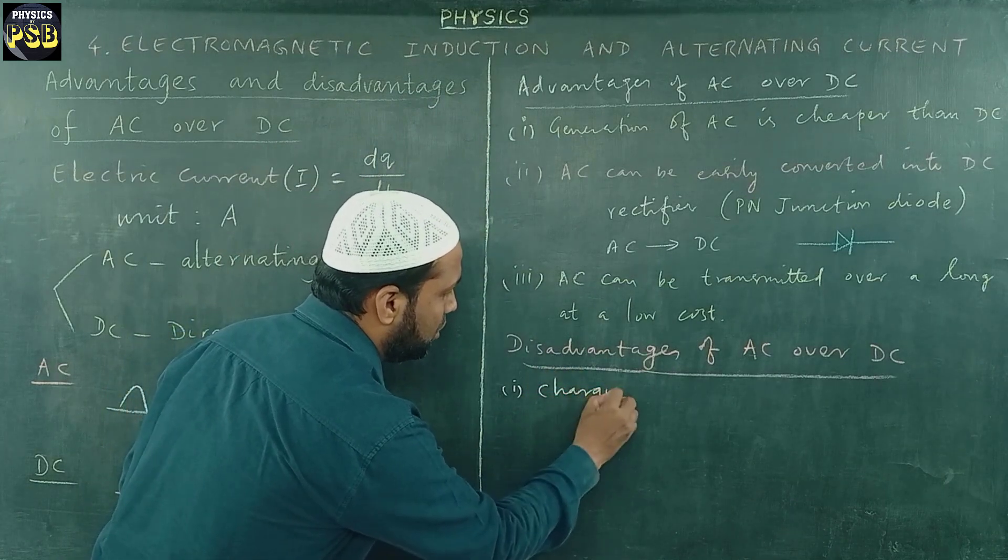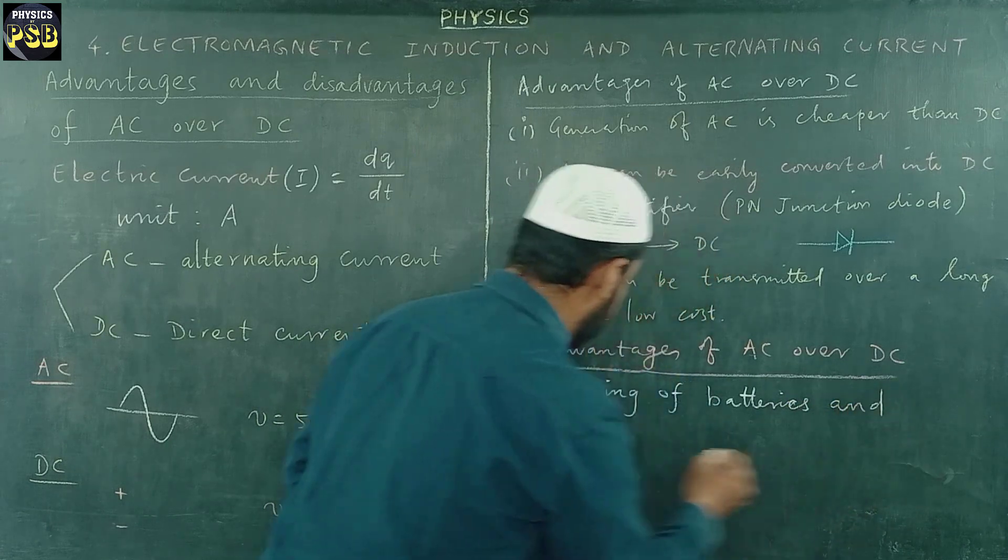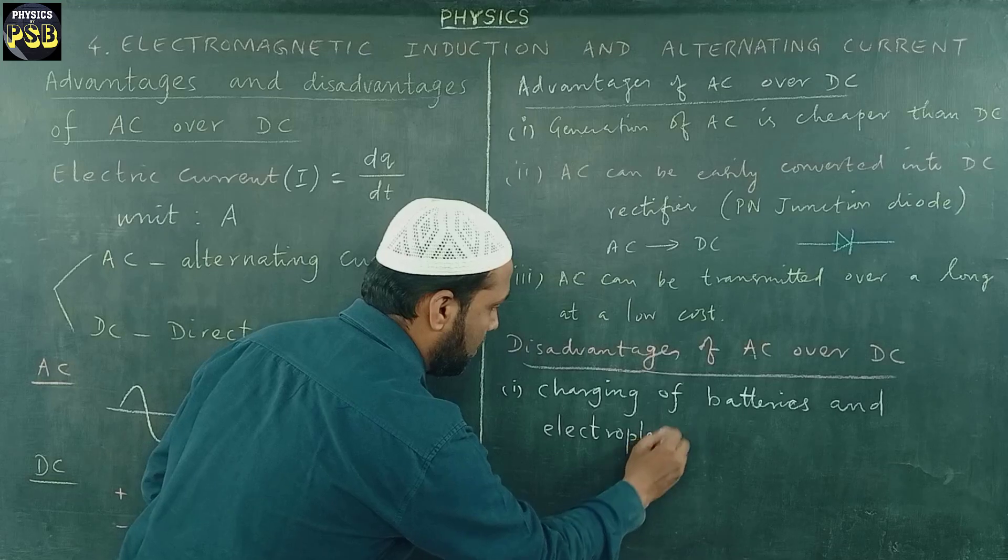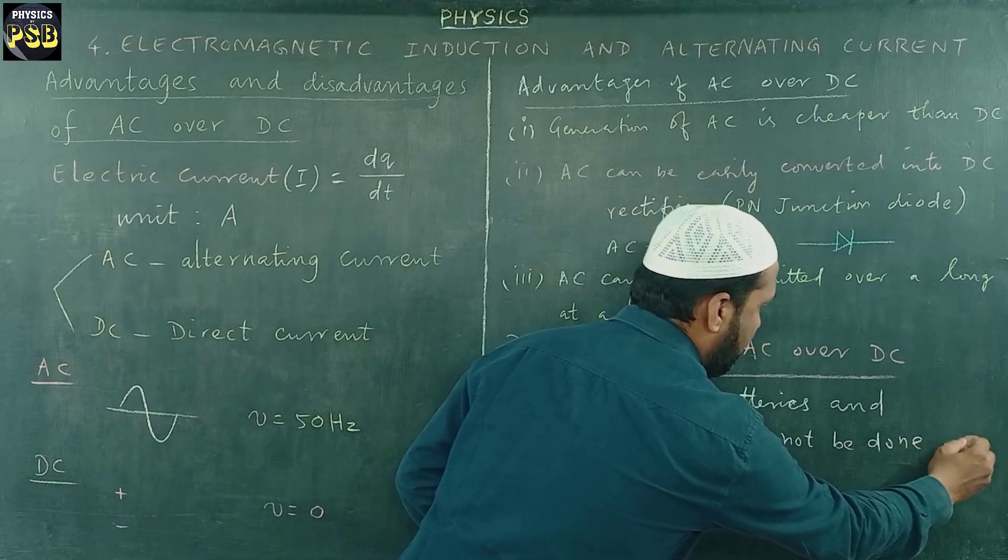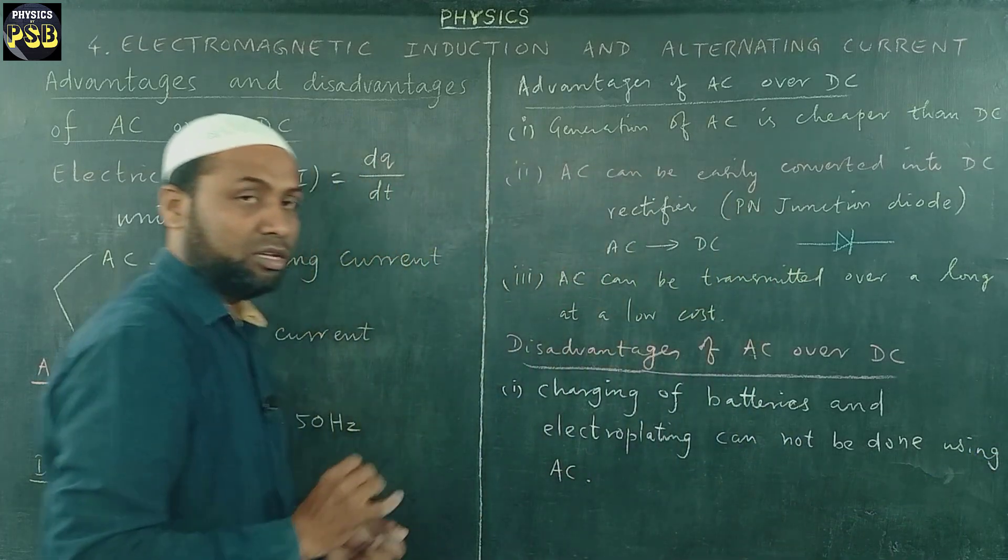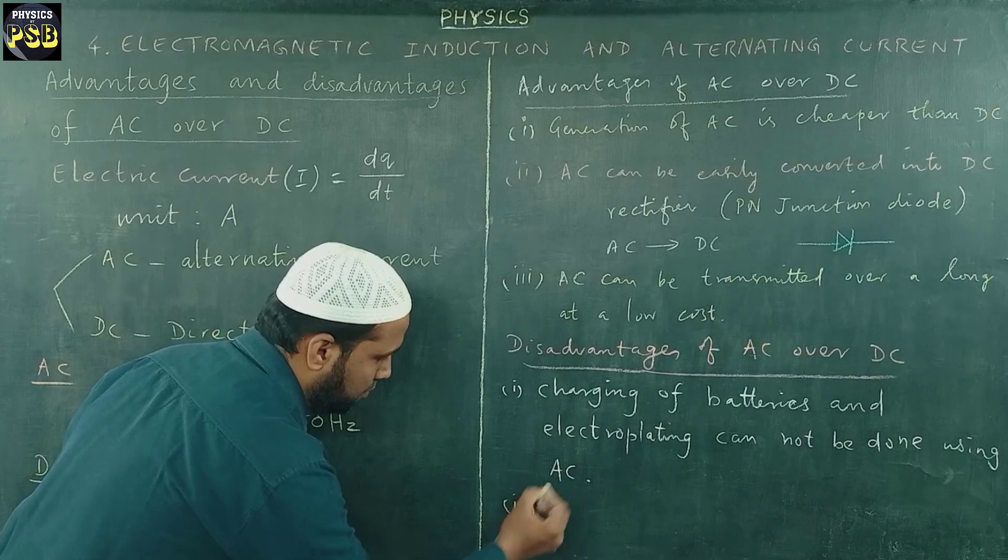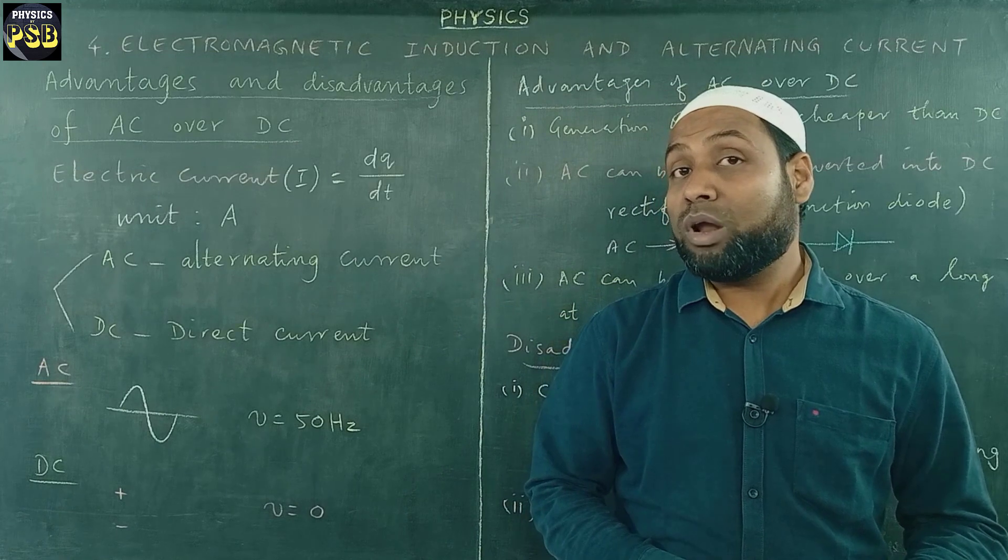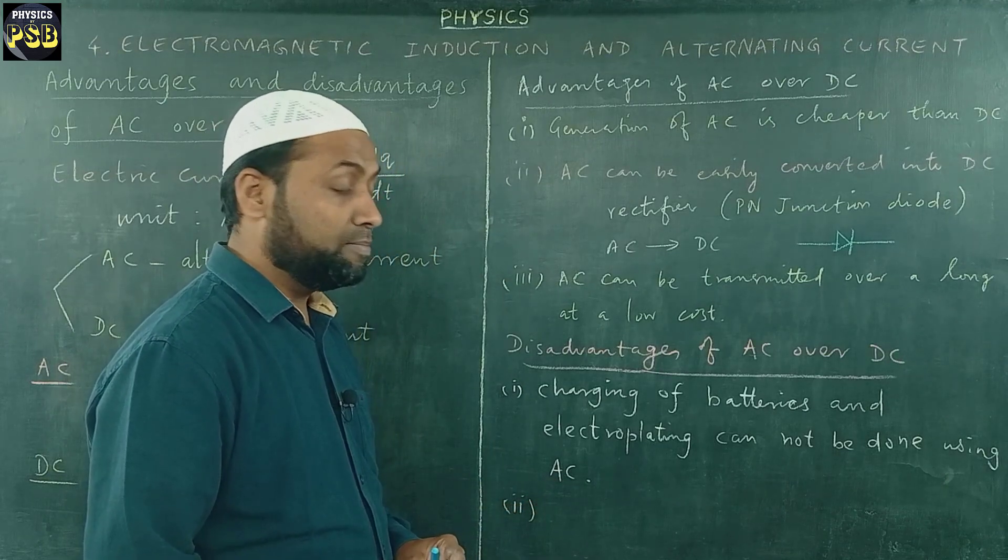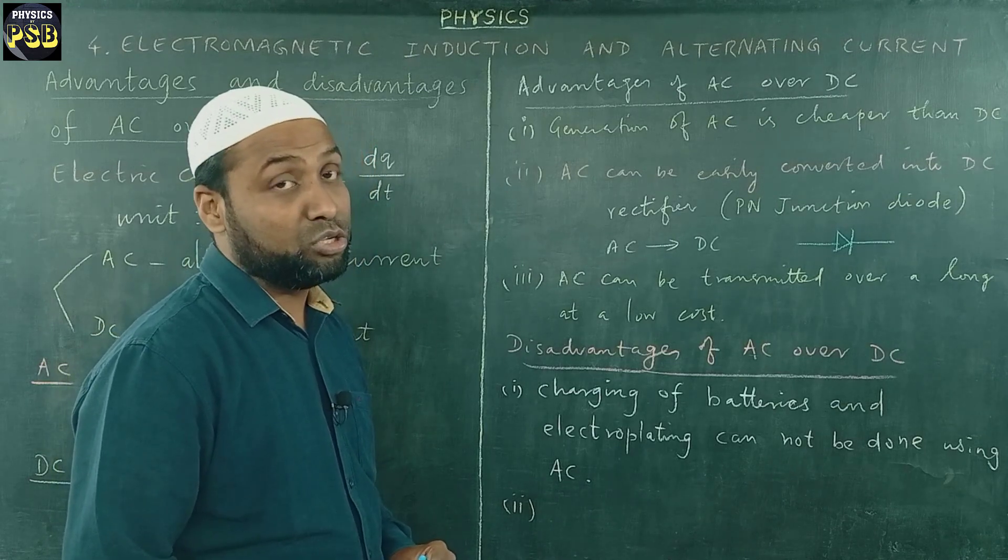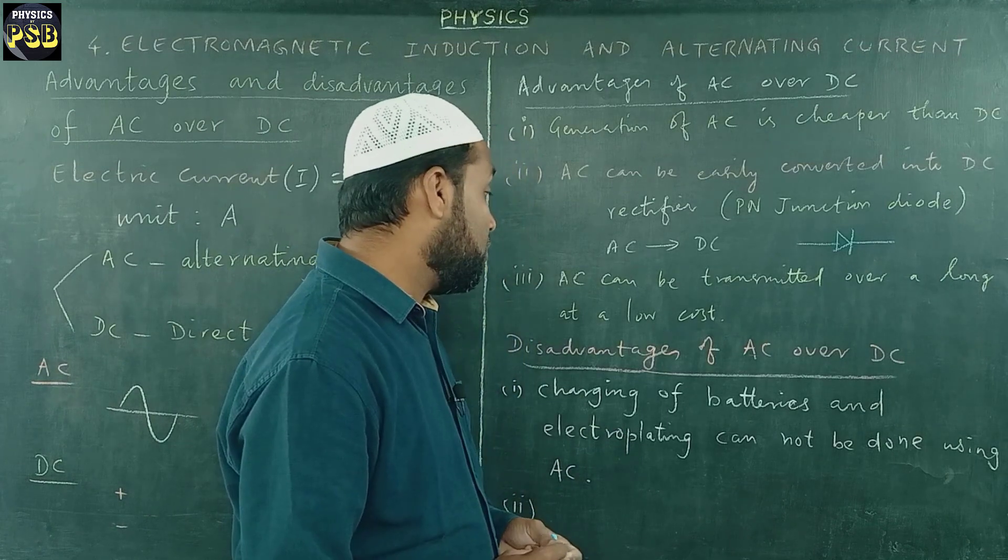It is only done using DC. Charging of the battery and electroplating cannot be done using AC. Next, it is dangerous to work at high voltage using AC compared to that of DC. High voltage AC is dangerous to work compared to that of DC. This is another disadvantage of AC over DC.